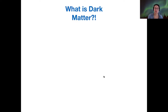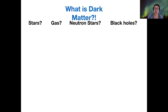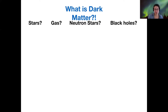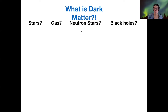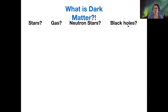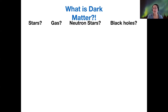So what the heck is this stuff? There are a bunch of ideas for what it could be. Maybe it's stars that are really dim, or maybe they're hidden behind a dust cloud so we're not accounting for all of them. Or maybe it's gas that we're not picking up on. Maybe it's neutron stars — some of them do emit radiation, but not all of them emit radiation that points in our direction. Or maybe there are black holes out there and we can't see them because they're not emitting light. So dark matter could be any of these things.